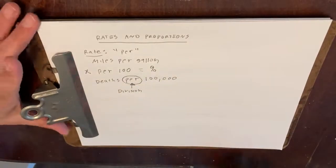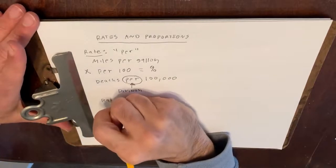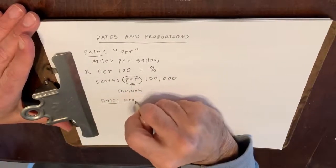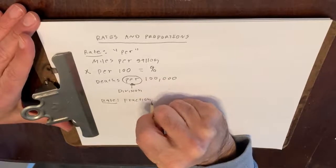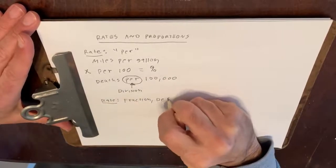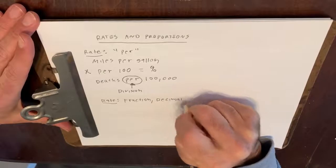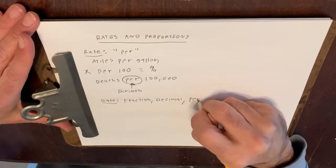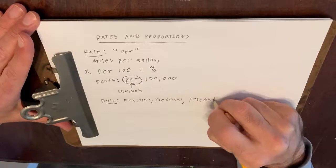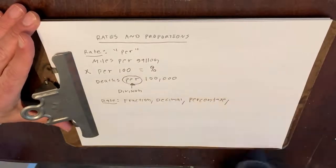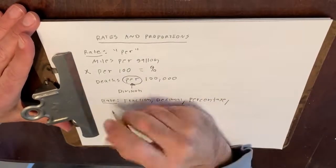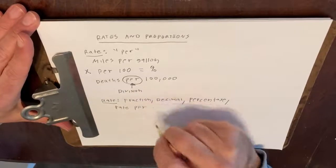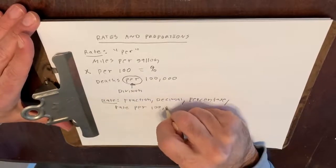When we have a rate, we could have a fraction, we could have a decimal, we could have a percentage. And often we will see a rate per 100,000.